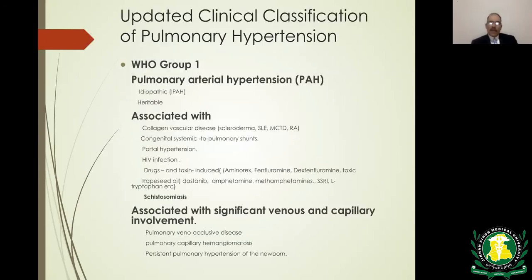The updated clinical classification of pulmonary hypertension is derived from the Fifth World Symposium on Pulmonary Hypertension held in France in 2013, which divided pulmonary hypertension into five WHO groups.